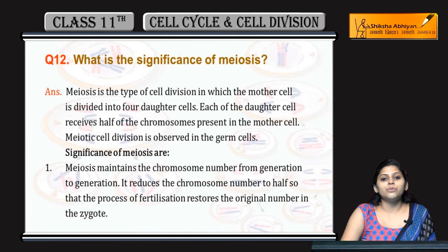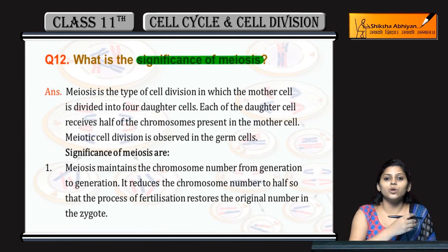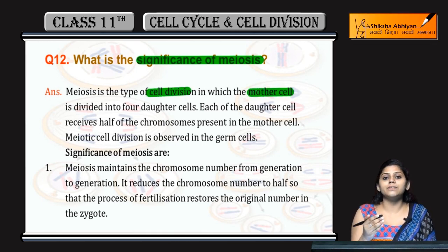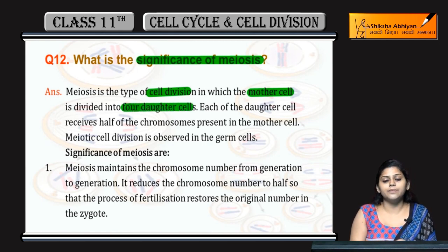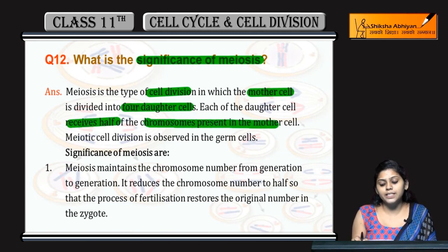Next question number 12: What is the significance of meiosis? Meiosis is cell division in which the mother cell is divided into four daughter cells. Each daughter cell receives half of the chromosomes present in the mother cell.